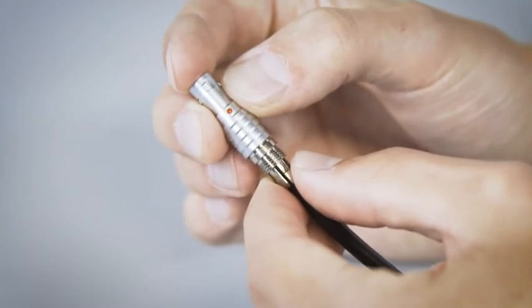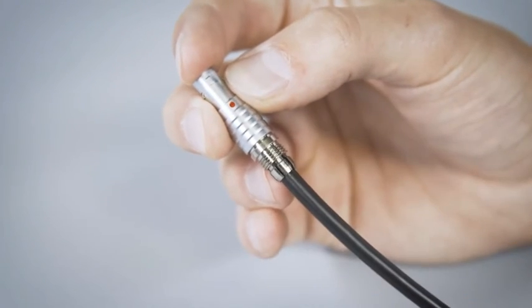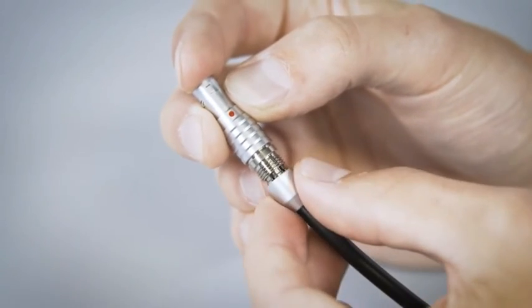Slide the collet into the outer shell. Make sure the key is aligned with the red dot. Screw on the collet nut, but do not over-tighten.